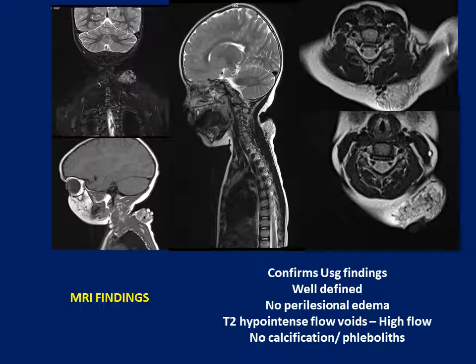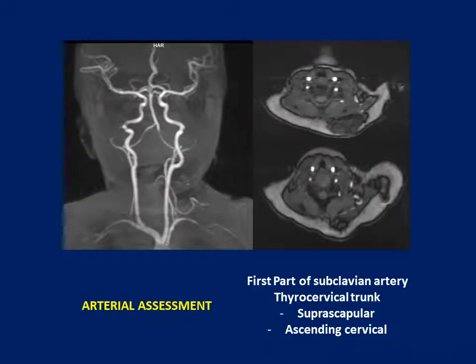Dynamic sequences confirmed these hypointense signals were blood vessels and not calcification. The MRI was done primarily to evaluate enhancement, arterial flow, venous flow, and nidus if any. At this stage, the differential remained AV malformation versus hemangioma, both of which can show flow voids. On the left side of the neck, an extra blood vessel is visible running through the region.